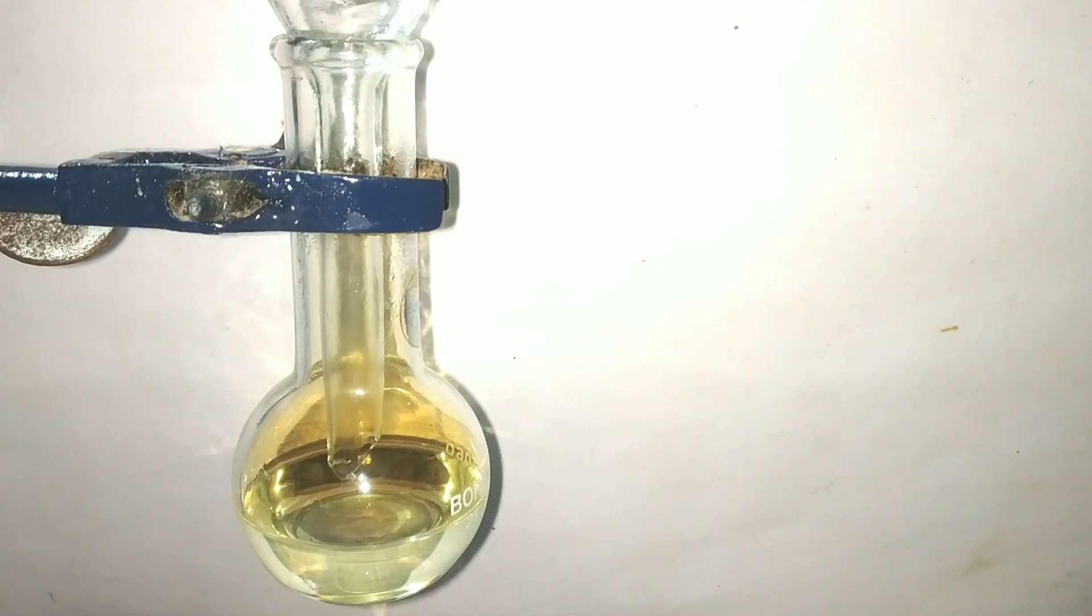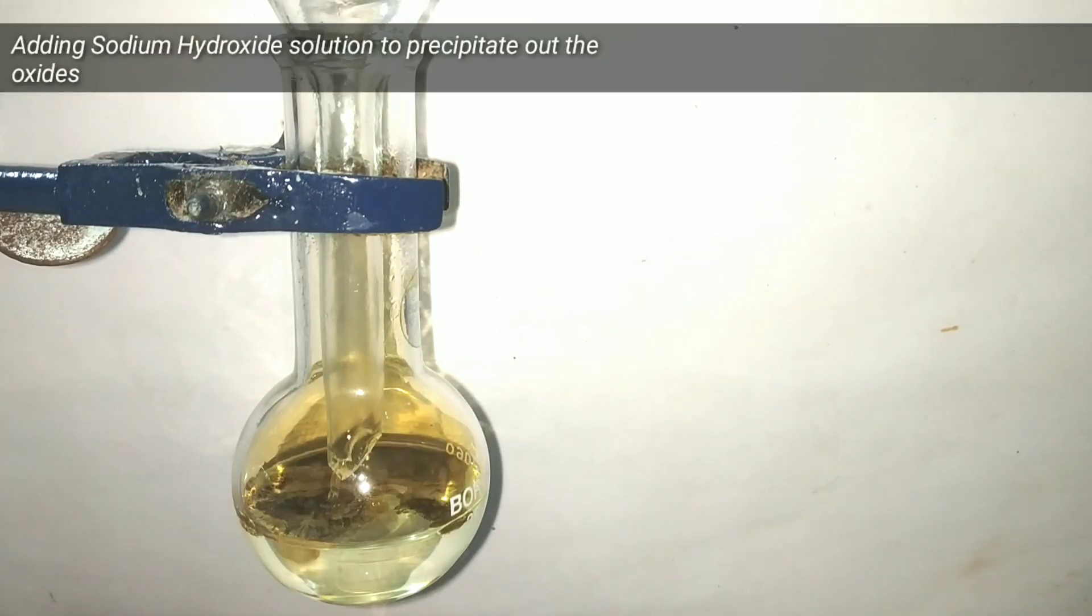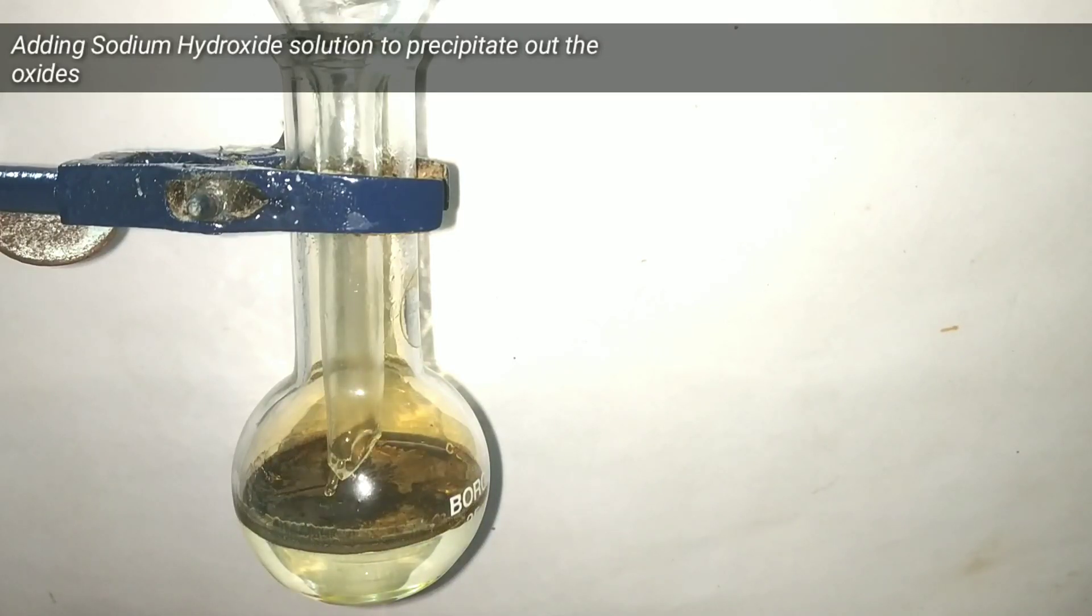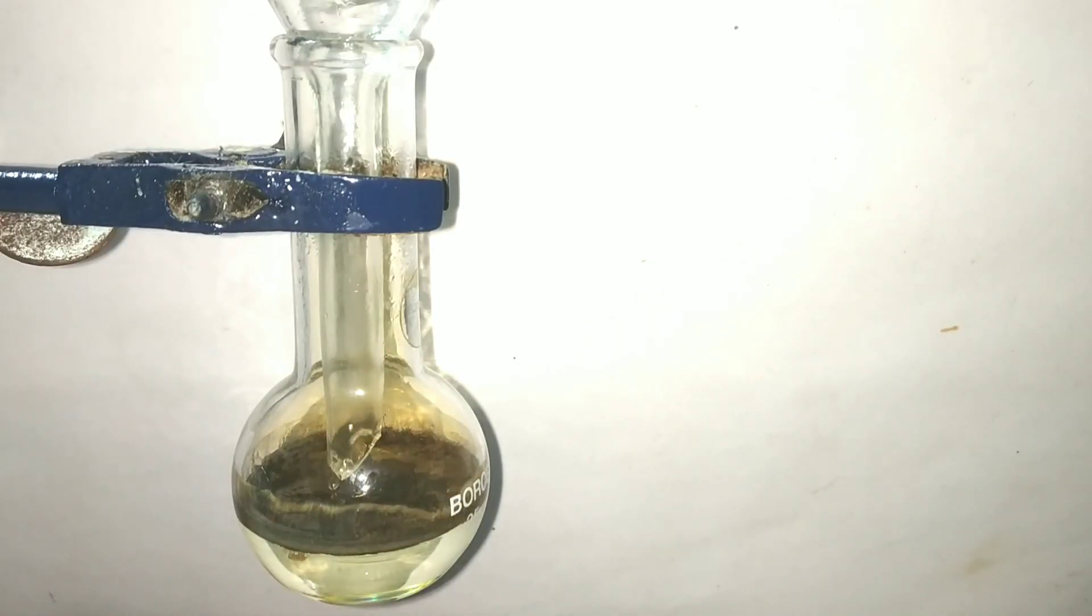When all the mercury metal has dissolved and when the solution turns clear, we add sodium hydroxide. You can see that a grayish precipitate is formed. This is the mercury 1 oxide. There was yellow to orange precipitate of mercury 2 also formed.